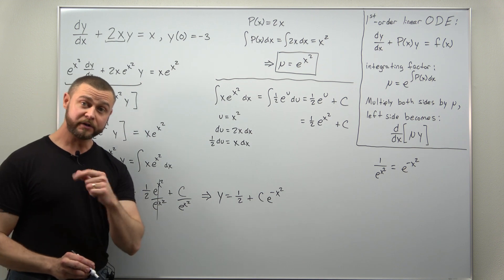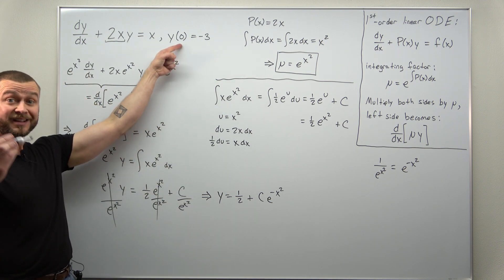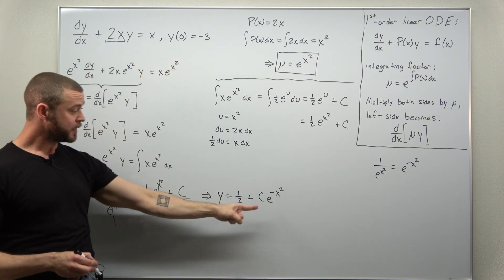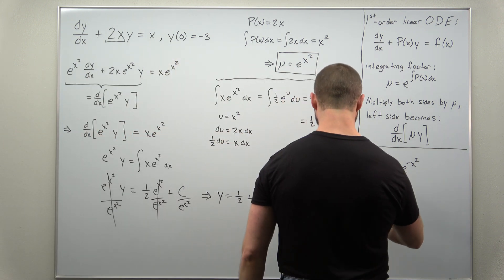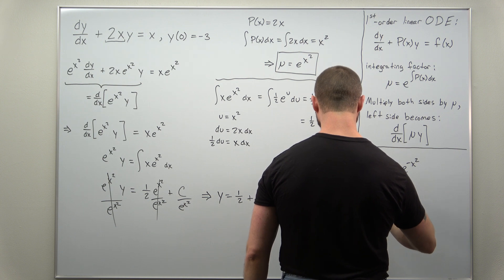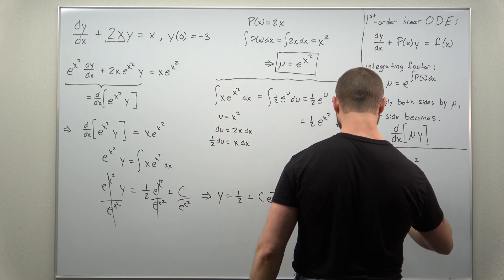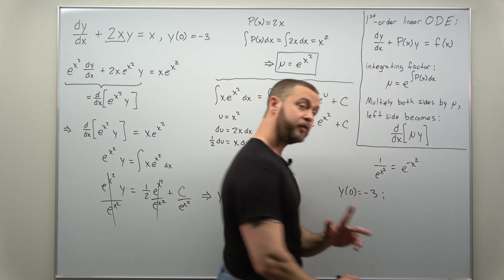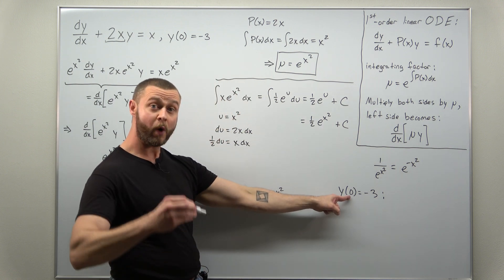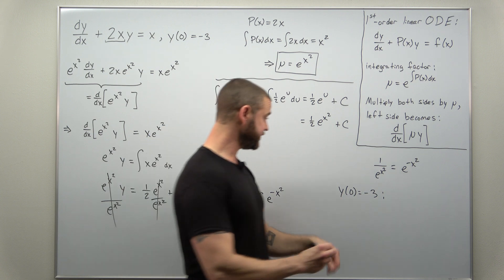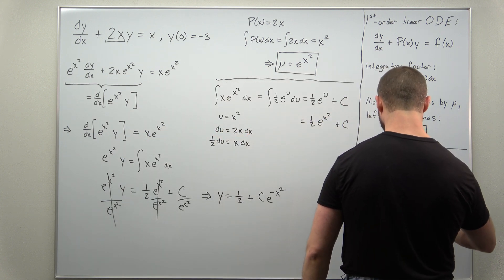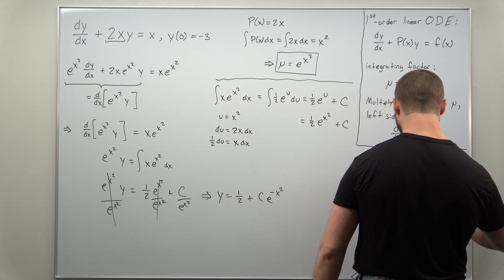All right. The last thing that we're going to do is notice the differential equation gives us an initial condition that's going to allow us to solve for c here. So if we write it down, y of 0 equals negative 3. The notation here is telling you y as a function of x, so your x value, the input, is 0, but the output, the y, is negative 3.